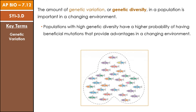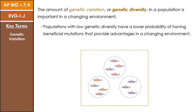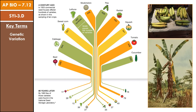Natural selection will act upon these adaptations and lead more individuals with that particular mutation to survive in the changing environment. But if we compare this to a population that has lower genetic diversity, a changing environment has a smaller probability of having a beneficial mutation within that population. If we don't have a wide variety of different phenotypes, an environmental change could wipe out the entire population. And we see an example of this in our commercial agriculture industry.